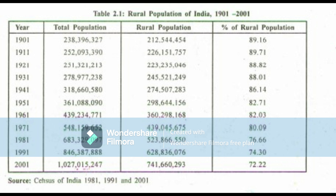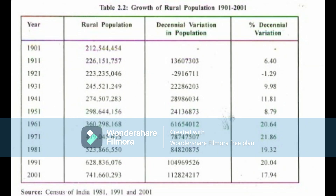Let us now look at the growth rate of rural population. The growth of population connotes the change in the number of people living in a particular area during a specific period of time. It is positive if there is an increase in population and negative if there is a decrease. Table 2.2 presents the growth of rural population in India over 10-year periods, showing four distinct phases from 1901 to 2001: Phase 1 (1901-1921) — very slow growth; Phase 2 (1931-1951) — steady growth; Phase 3 (1961-1981) — rapid high growth; Phase 4 (1991-2001) — high growth with definite signs of slowing down. Population growth leads to overcrowding in living space and fragmentation of land.